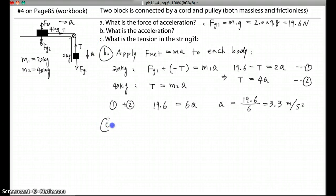And then for part c, c is asking what is the tension in the string. It's very easy now because you already know a. You can plug into either of these equations, so you can get T. Obviously we choose equation 2. So T equals 4A. Then just 4 times 3.3, a equals 13, 13 Newtons.